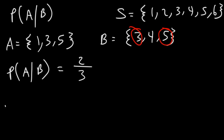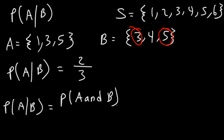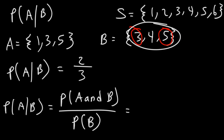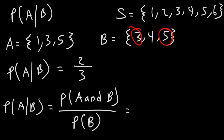Now there's a formula you need to know. To calculate conditional probability, it is the probability of event A and event B occurring divided by the probability that event B will occur. Event B has three outcomes out of six total outcomes in the sample space, so the probability of event B is three out of six.